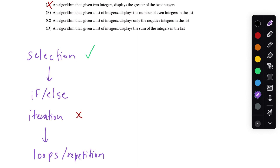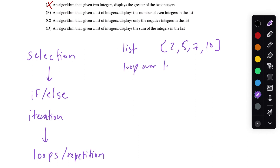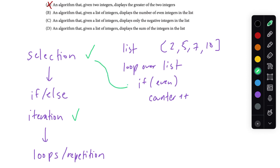Next: an algorithm that, given a list of integers, displays the number of even integers in the list. We'd have some sort of list, loop over the list, check if it's even, and increment a counter. This has both selection and iteration — our selection is the if statement checking for even numbers, and our iteration is the loop over every number in the list. So B is one of the right answers.